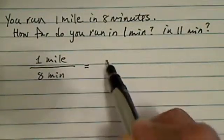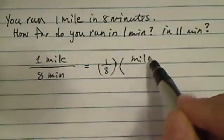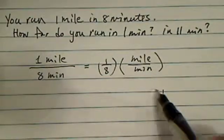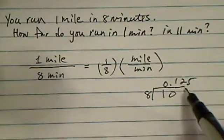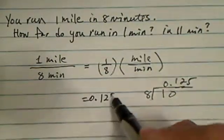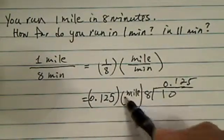In this one you can divide 1 over 8, that would give you mile per minute. If you do a long division or if you want to do it on a calculator, you'll see this one is 0.125. So you have 0.125 miles for every minute.